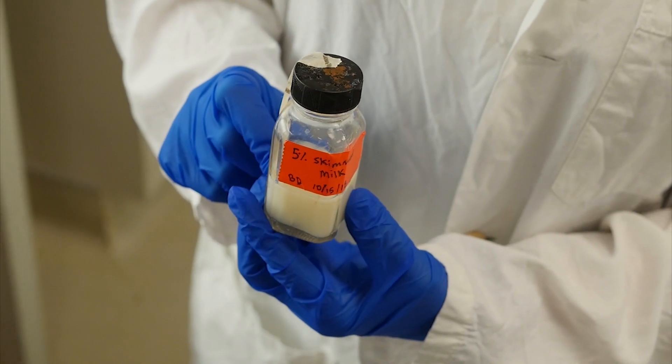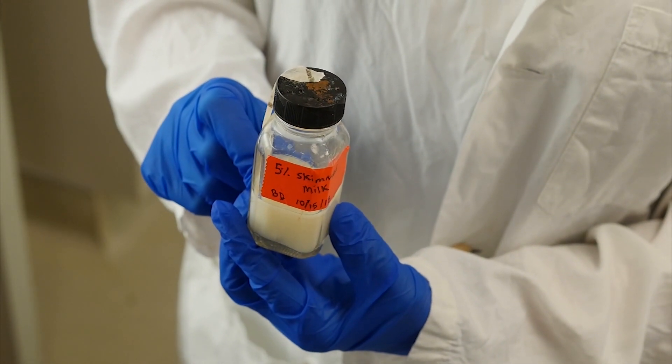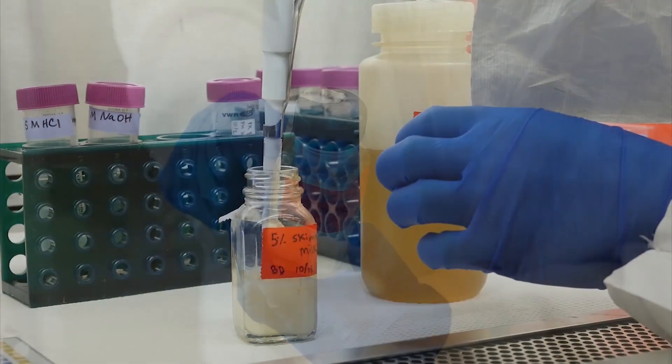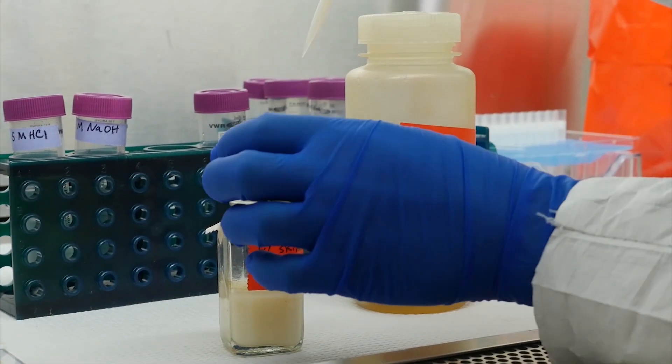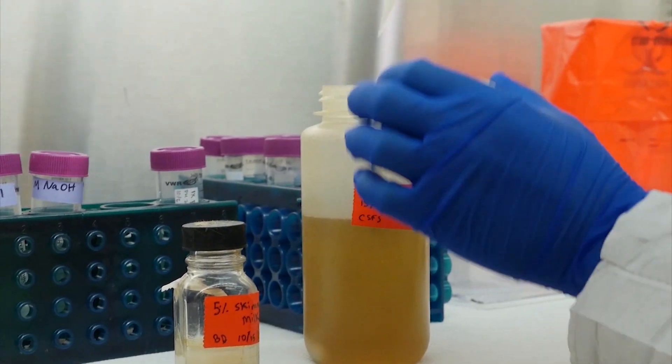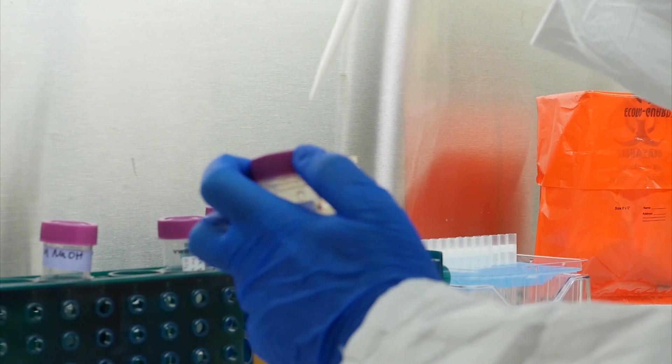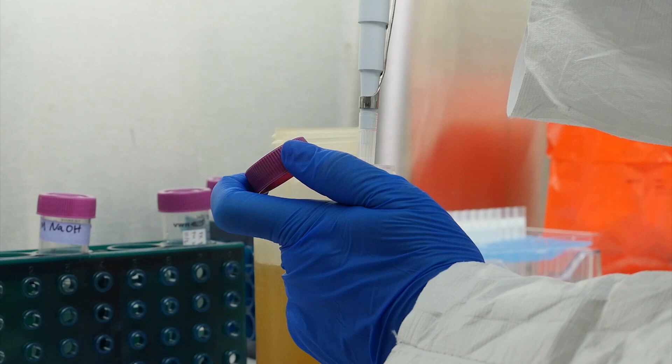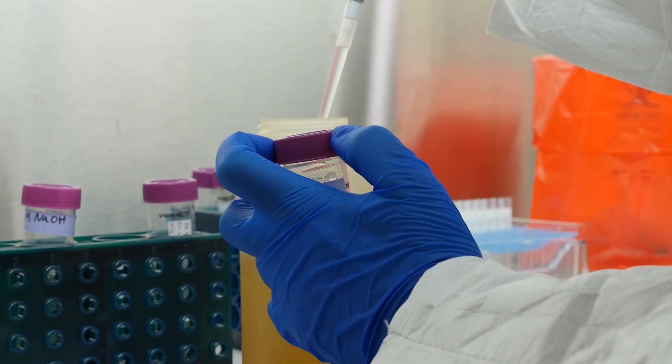You are now ready to begin the skimmed milk flocculation secondary concentration procedure. Add 3 milliliters of skimmed milk to the sample. Adjust the sample to a pH between 3.0 and 4.0 using hydrochloric acid and sodium hydroxide.